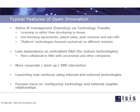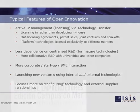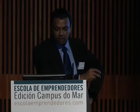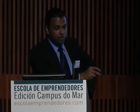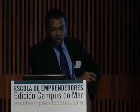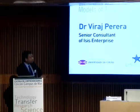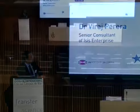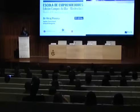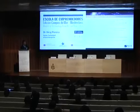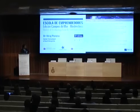I'm addressing the core features of open innovation where industry and universities can collaborate. In terms of active intellectual property management — for example, licensing to transfer technology — this became an efficient mechanism rather than developing in-house. Out-licensing agreements, patent sales, and joint ventures, spin-out or spin-off companies. Platform technology can be licensed exclusively to different markets. You can maximize the value coming out of IP from an entity by doing this.